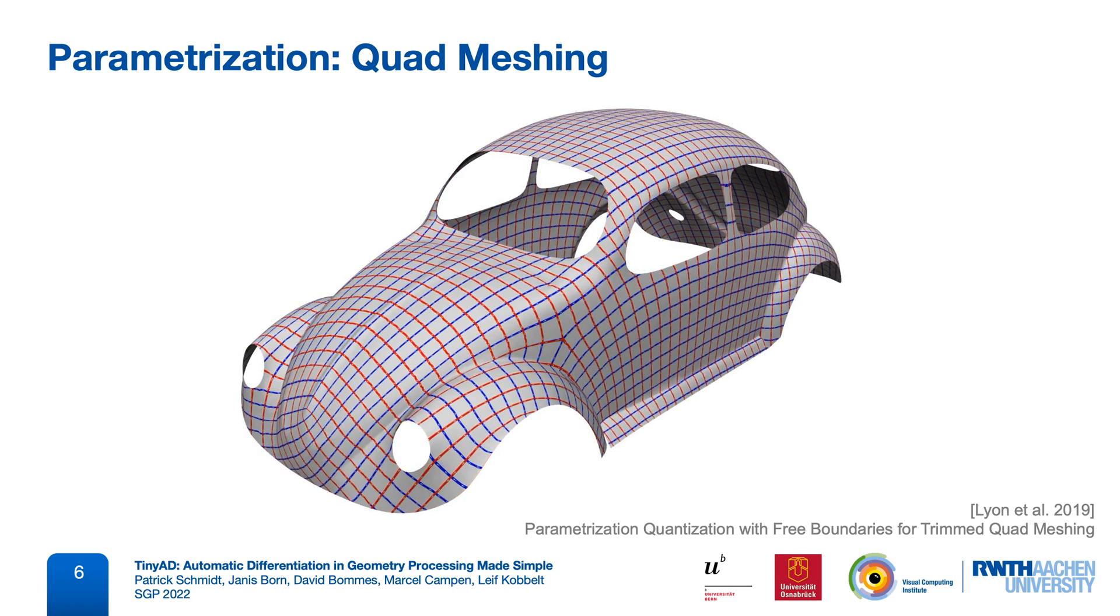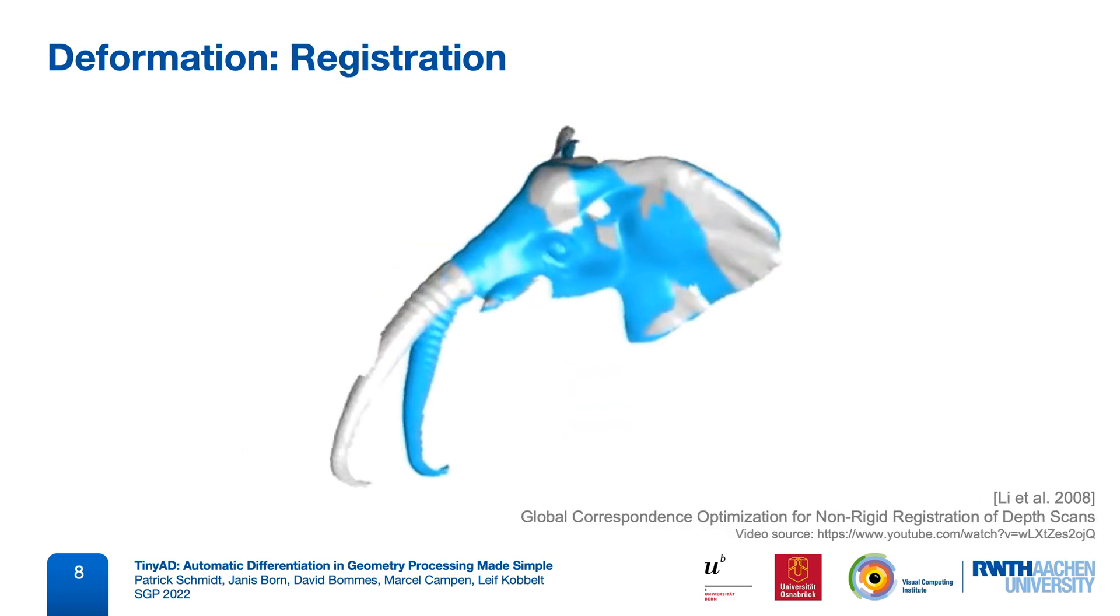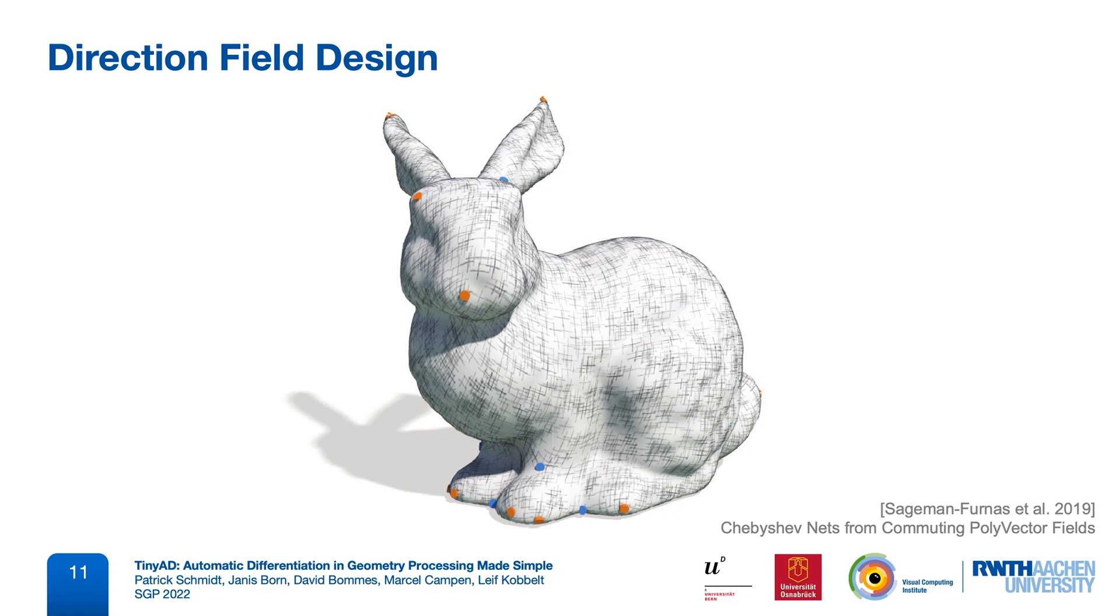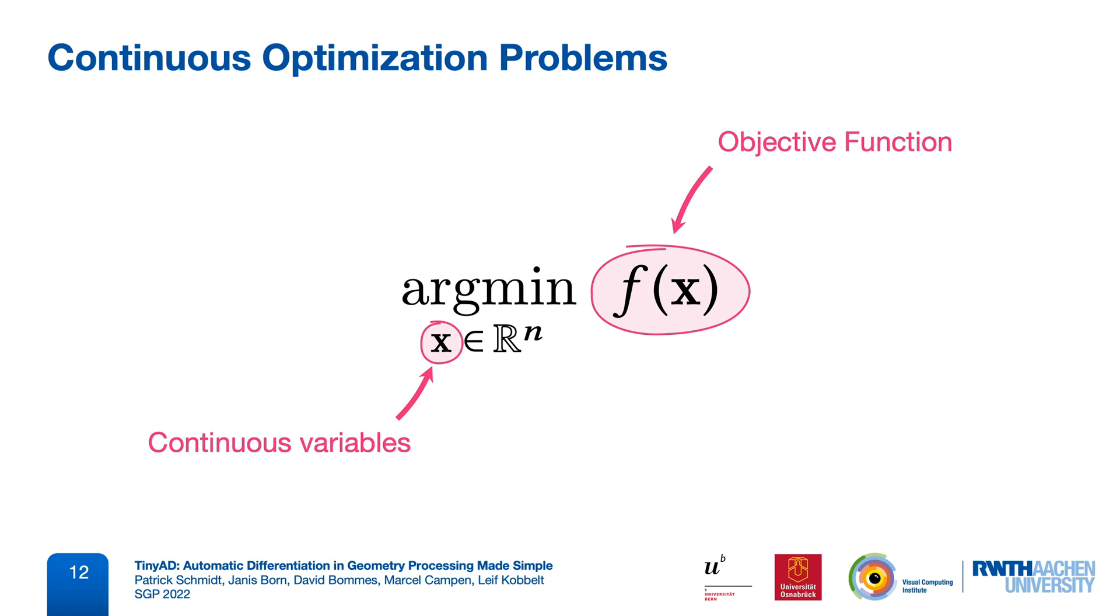In mesh deformation, vertex positions are optimized in 3D, either for animation, or for surface registration, or for developable surface approximation, and much more. Variables could also correspond to tangent vectors on a surface, which are then used for remeshing or for fabrication. So, there are a lot of examples that involve problems of this general format.